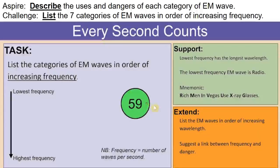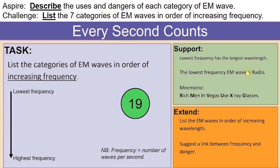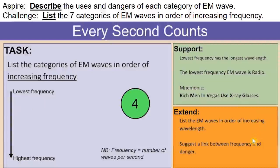For some people who have seen EM waves before, you might find this really easy and already be most of the way through the list. Here's an extension: write them in order of increasing wavelength — that's a different way of ordering them. And if you want to go even further, try and suggest a link between the frequency and the danger. For those who need more support, the lowest frequency is the one with the longest wavelength, and that's radio. You can also use the mnemonic 'rich men in Vegas use x-ray glasses' to guide you.